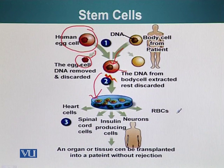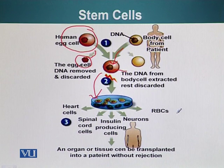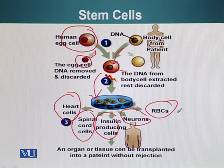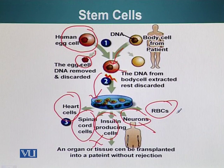Embryonic stem cells have two very remarkable abilities. First, they have an unlimited ability to divide, as opposed to adult stem cells which have a relatively limited ability to divide. Second, these embryonic stem cells can be differentiated into almost any type of cell in the body — for example, heart cells, spinal cord cells, insulin-producing cells, neurons, even red blood cells. It is worth noting that differentiating adult stem cells into neurons or insulin-producing cells is very challenging and attempts have not been very successful. Once customized embryonic stem cells have been made, they can now be used to repair different damaged tissues.